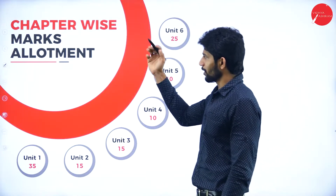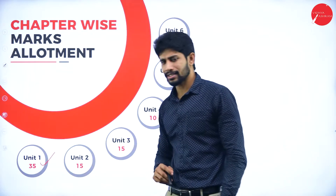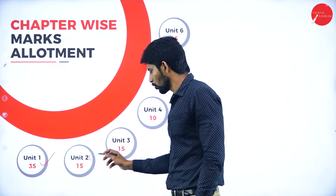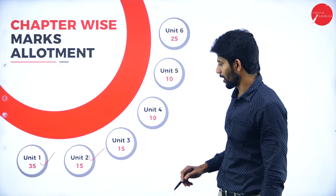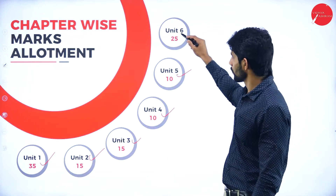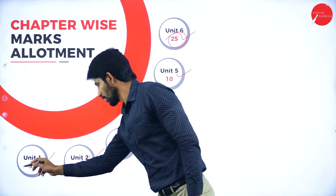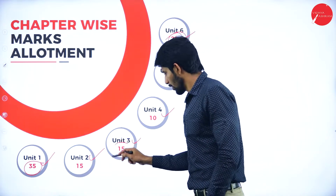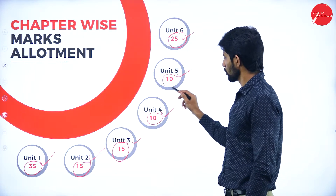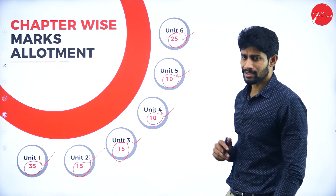Regarding the importance to give each chapter: Unit one carries 35 marks, unit two carries 15 marks, unit three carries 15 marks, unit four carries 10 marks, unit five carries 10 marks, and unit six carries 25 marks. So give high priority to unit six and unit one, concentrate well on units two and three, and give less importance to units four and five since they together carry only 20 marks.